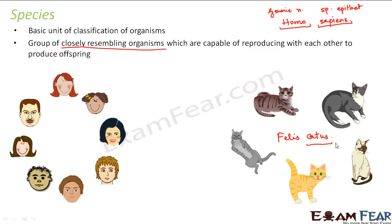So whenever somebody asks how you know if two organisms belong to the same species, one important criterion is the capability to reproduce. That is what actually denotes whether two organisms are of the same species. Examples of species are human beings, cat, dog, mango, and rose — each of them belongs to a different species.